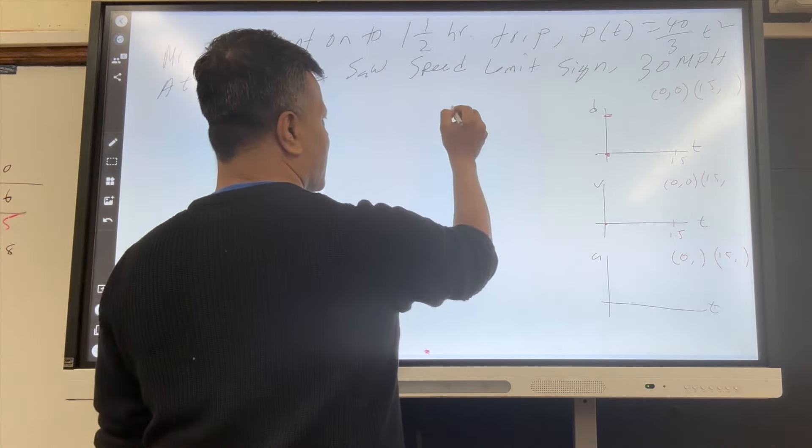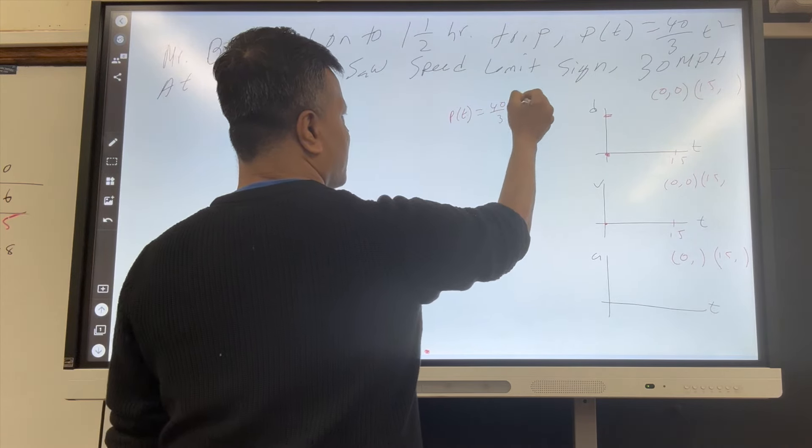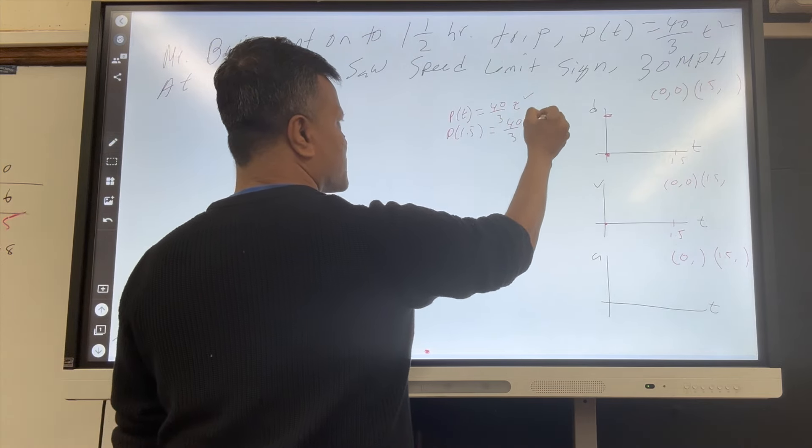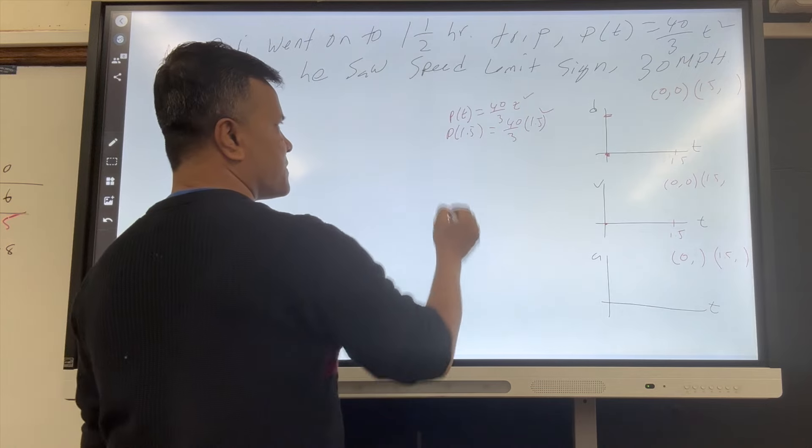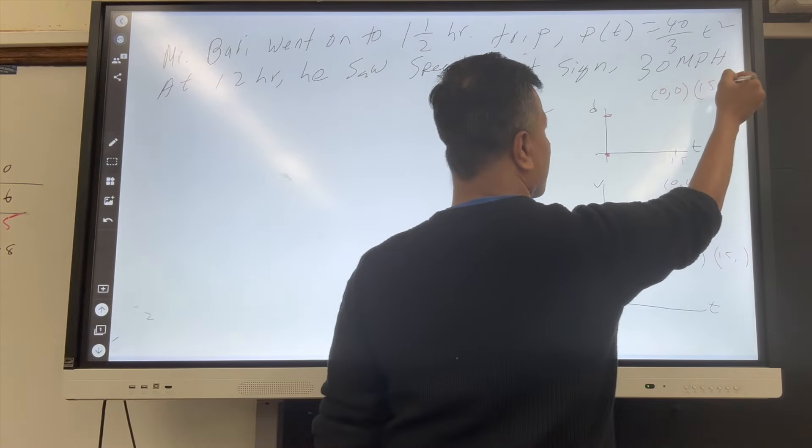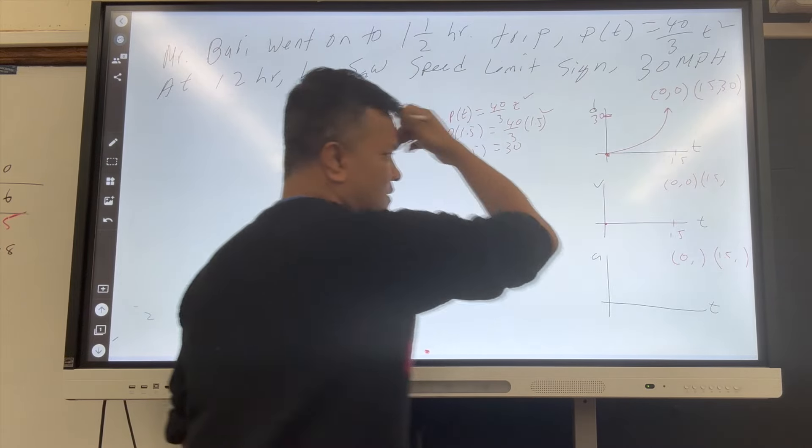So how can you find this? P of T is equal to 40 over 3 T squared. So P of 1.5 is equal to 40 over 3 times 1.5 squared, and that makes it P of 1.5 is equal to 30. So this is 30, it's a parabola.